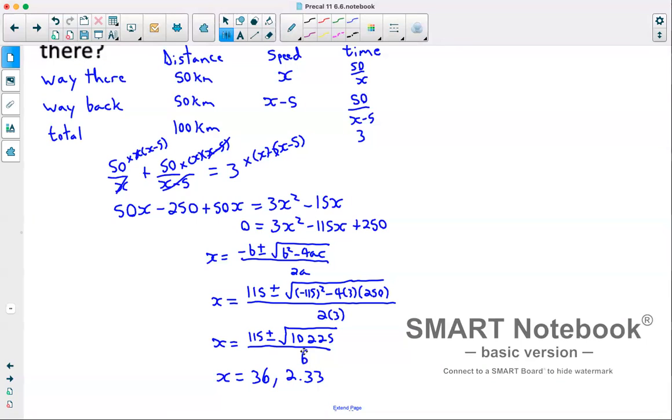We'll compare these with what we have up here. Now, only one of these answers makes sense because the 2.33, if we put in for our speed for this one, gives us a negative answer, which doesn't make sense. So 36 kilometers an hour would be our speed on the way there.